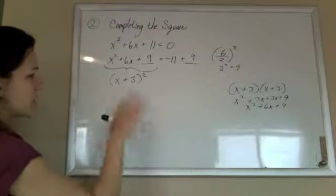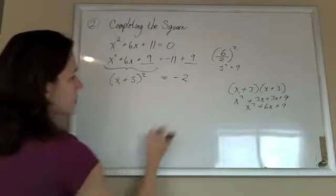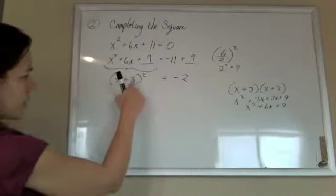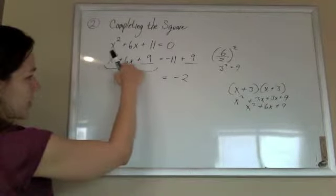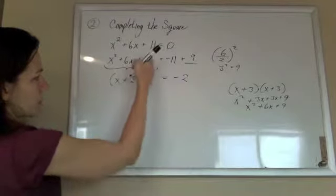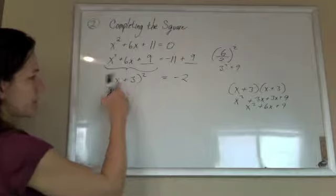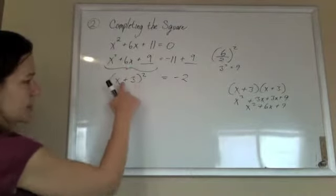So again, not changing it, just rewriting it so that it helps us. And this number here, that 3, is always—you can think of it as either half that middle number or the square root of the last number with the same sign as the middle. So if this were a minus, then this would have been a minus.